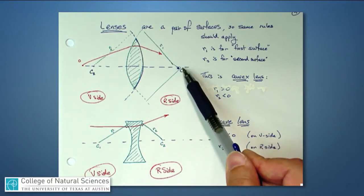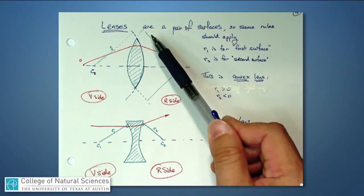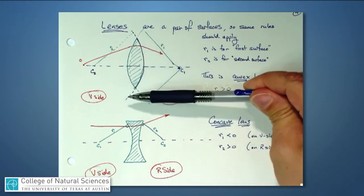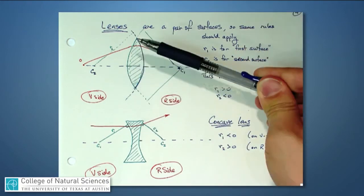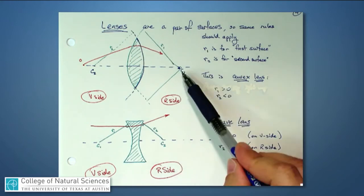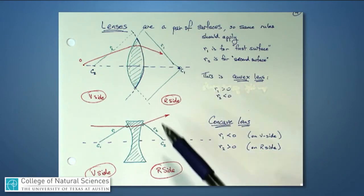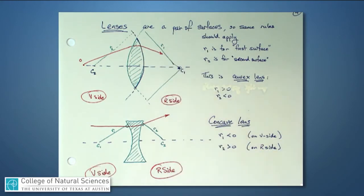R1 is actually a positive number in this case because its center of curvature is right there. So the center of curvature is the point from which we could draw a bunch of radii and have it sweep out this curved surface. Since the center of curvature is on the real side, R1 in our convention system for signs, positive and negative, R1 comes out to be a positive number.